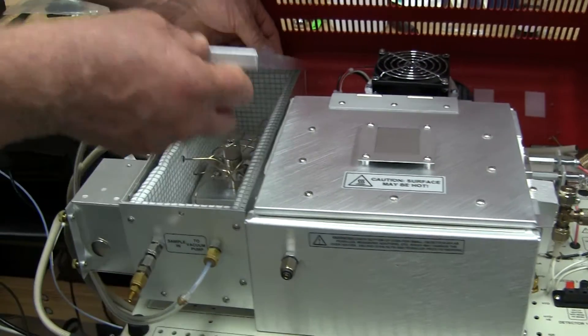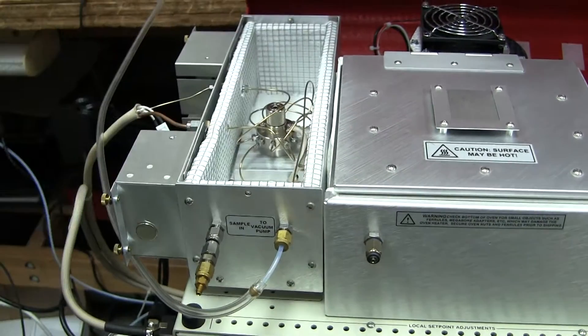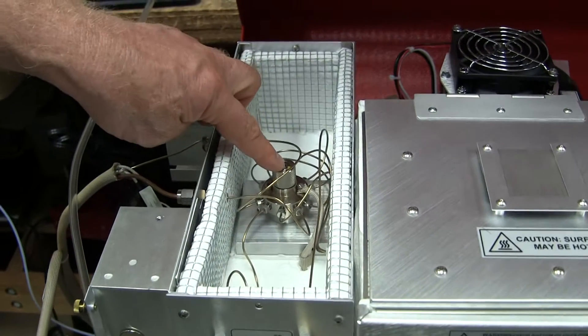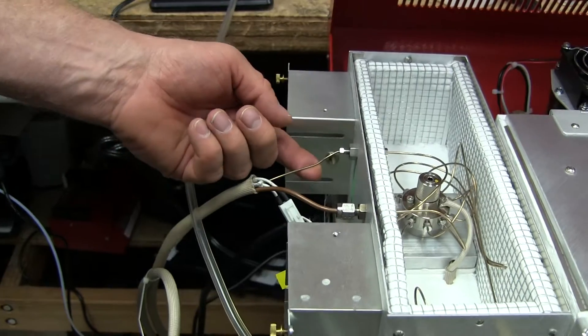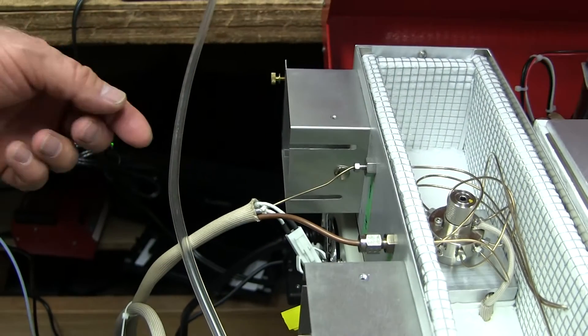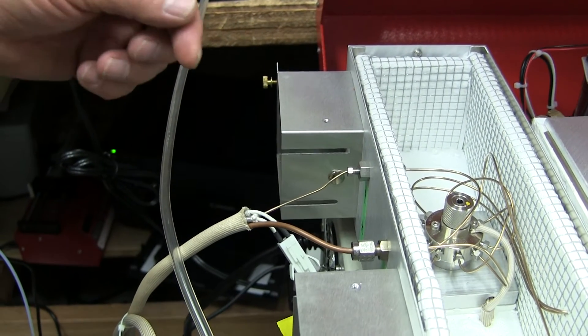Over here, we have the pre-concentrator which consists of a Valco valve and then a trap. This is a special kind of a trap, a cryo trap, meaning that it gets cold.